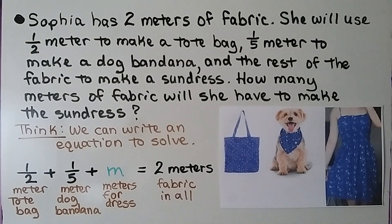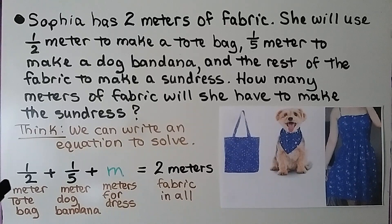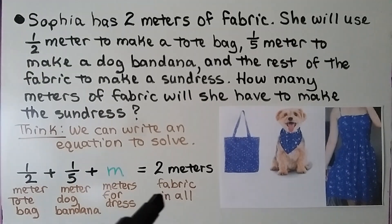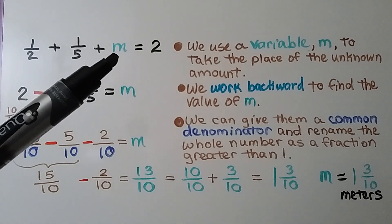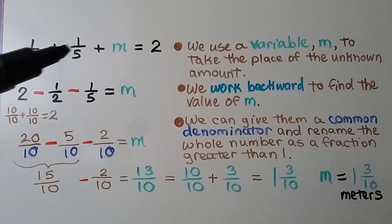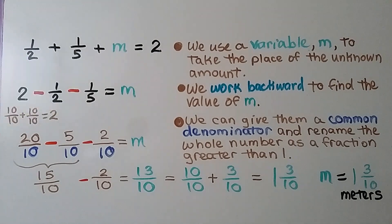Sophia has 2 meters of fabric, and she will use a half meter to make a tote bag, 1 fifth meter to make a dog bandana, and the rest of the fabric to make a sundress. How many meters of fabric will she have to make the sundress? We can write an equation to solve this. She used a half meter for the tote bag and a fifth meter for the dog bandana. We don't know how much she used for the dress, so we use m for meters. She had 2 meters of fabric in all. We use the variable m to take the place of the unknown amount.